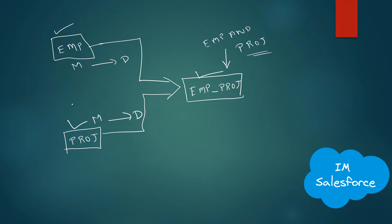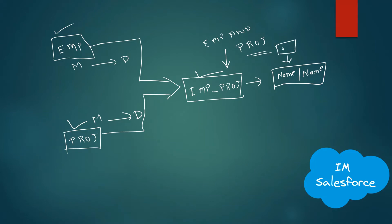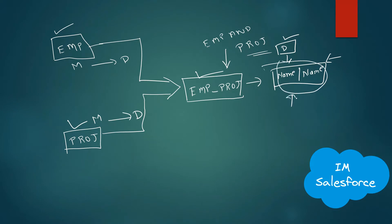So if one record is deleted from Employee or from Project, what will happen to the record in the junction object? The junction object record holds something like an employee name and a project name. If this employee name record has been deleted, what will happen to this particular junction record — will it be deleted or not? That is the question.